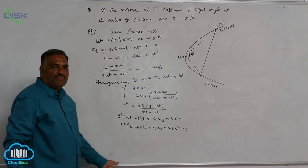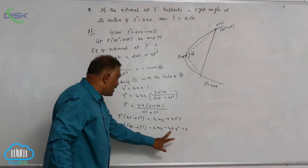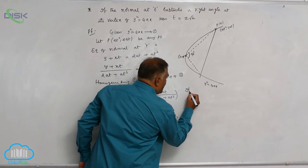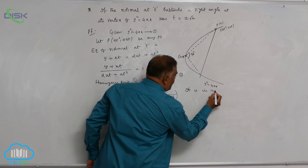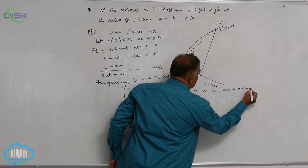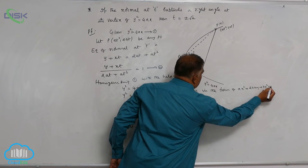Now, is it in the format of Ax square plus 2hxy plus by square equal to 0. So, it is in the format of Ax square plus 2hxy plus by square equal to 0.